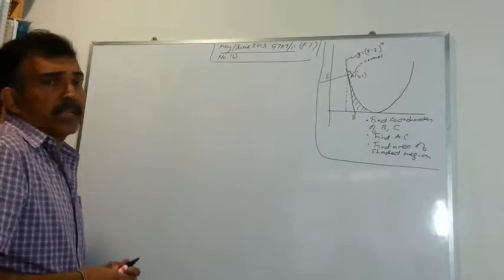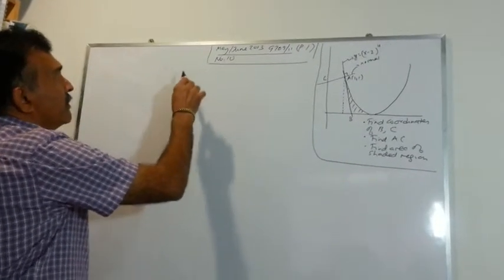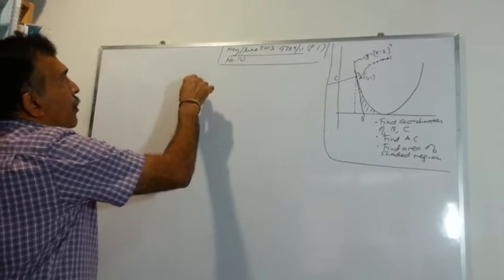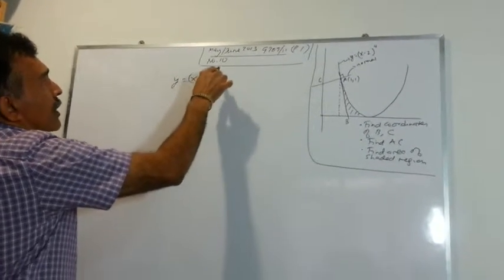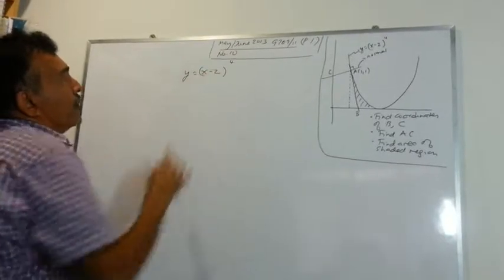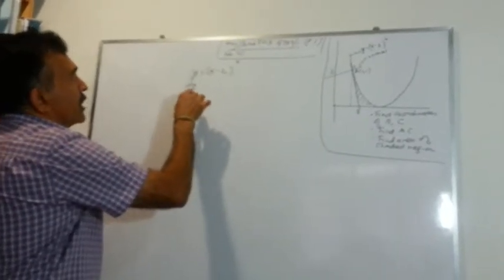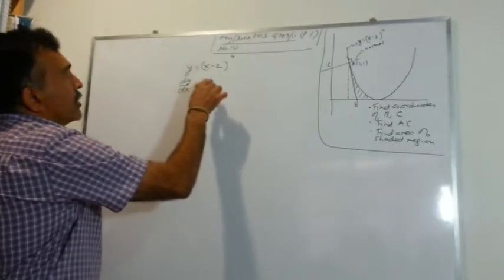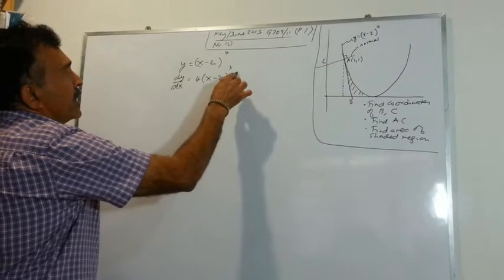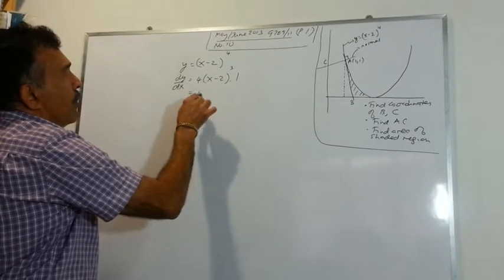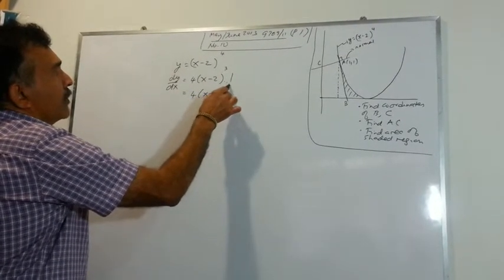Since we are dealing with tangents and normals, let's start by finding the derivative. y equals x minus 2 raised to the power of 4. So dy/dx: bring the power down, reduce the power by 1, and when you differentiate inside you get 1, so it is just 4(x minus 2) to the power of 3.